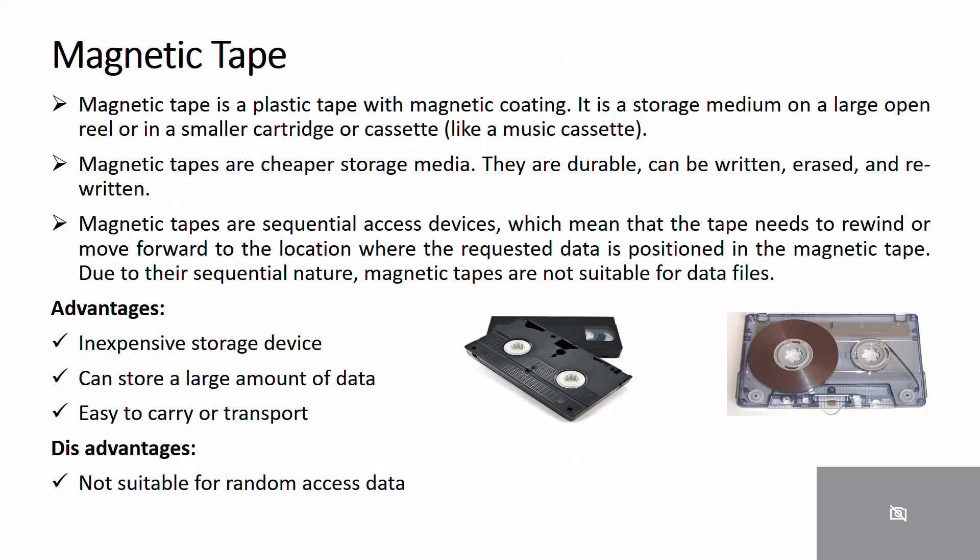Magnetic tape has advantages and disadvantages. Advantages include being an inexpensive storage device that can store a large amount of data and is easy to carry or transport. The main disadvantage is that it is not suitable for random access of data.